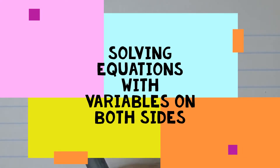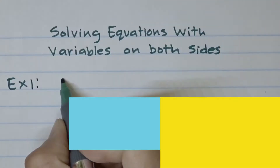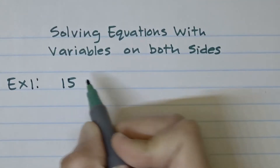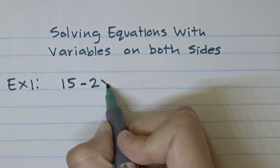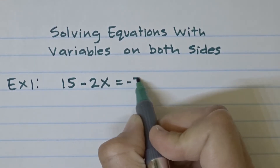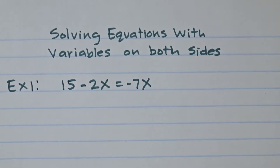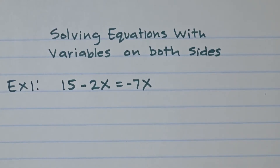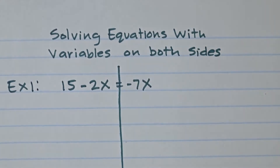Today we're going to be solving equations with variables on both sides. The first example is 15 minus 2x equals negative 7x. When solving these types of equations, you'll notice x terms on both sides of the equal sign.